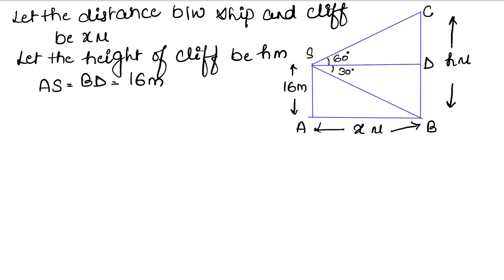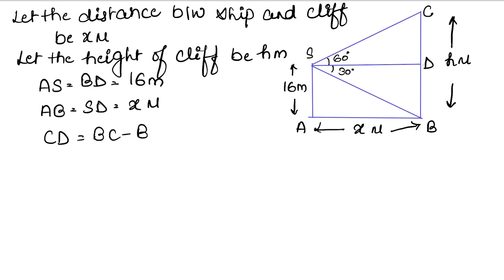AB equals SD equals x meters, and the height is 16 meters. Now CD equals BC minus BD, that is H minus 16. We can see two triangles — one is the elevation triangle and one is the depression triangle.